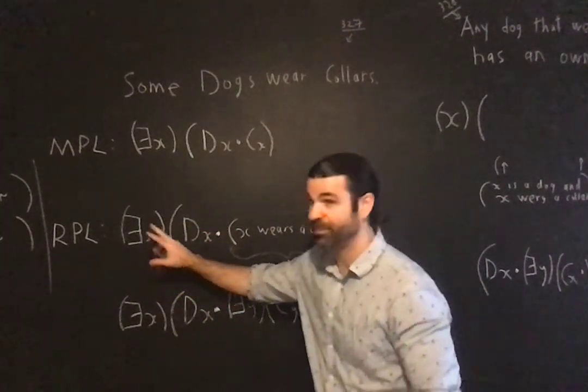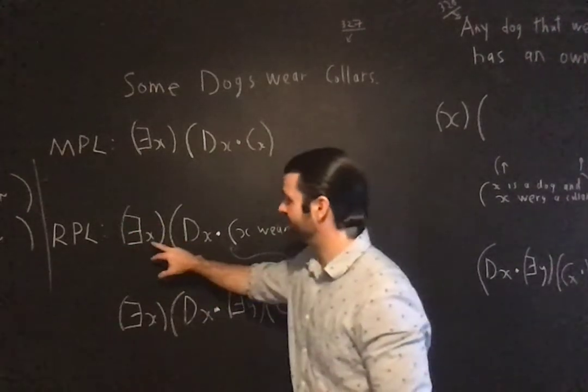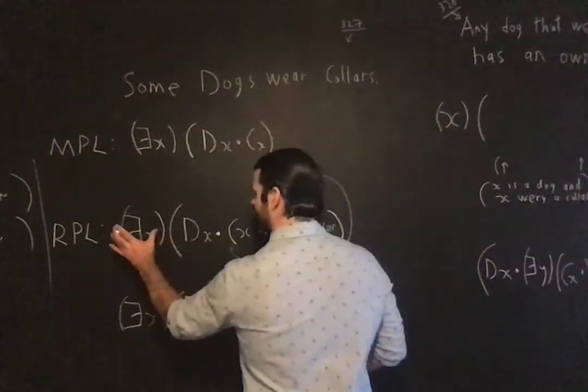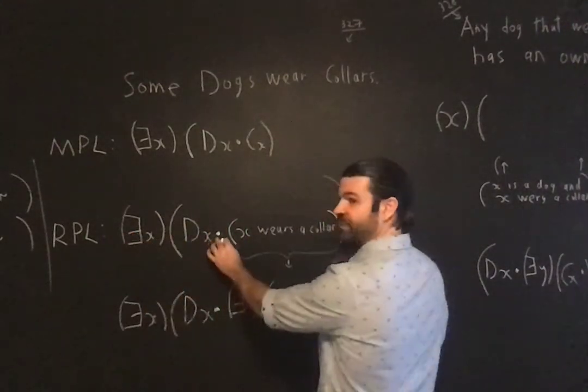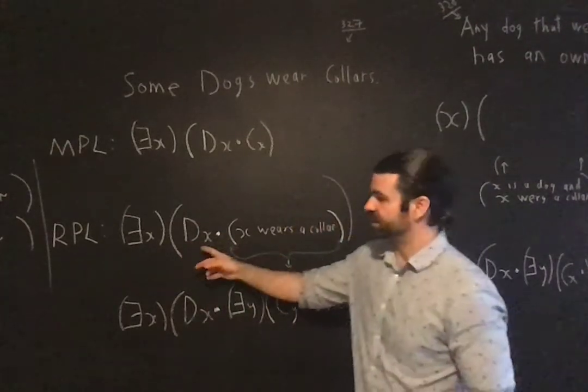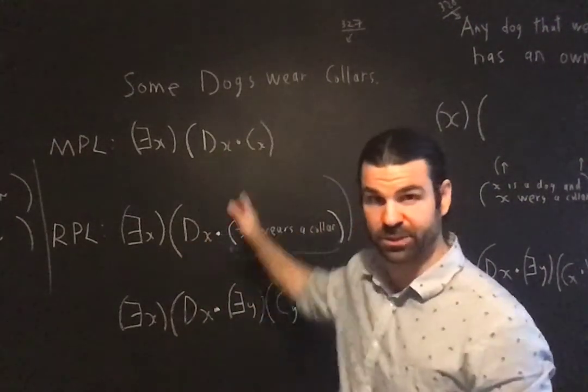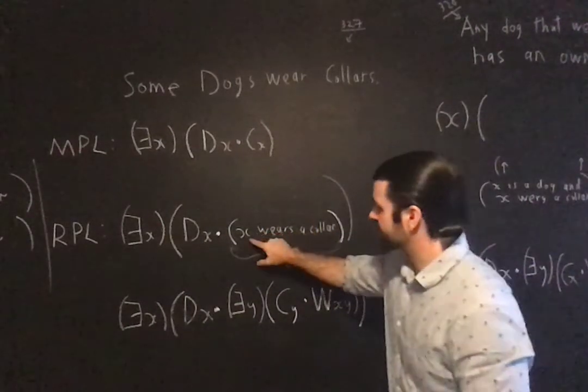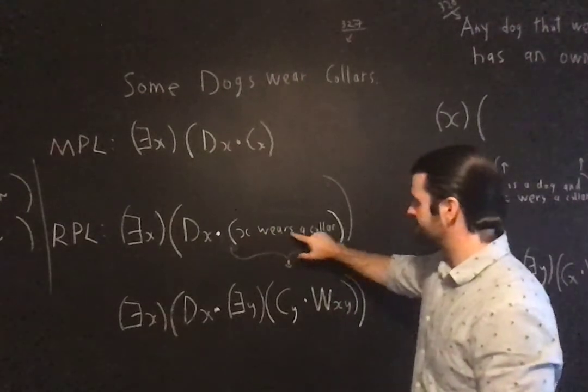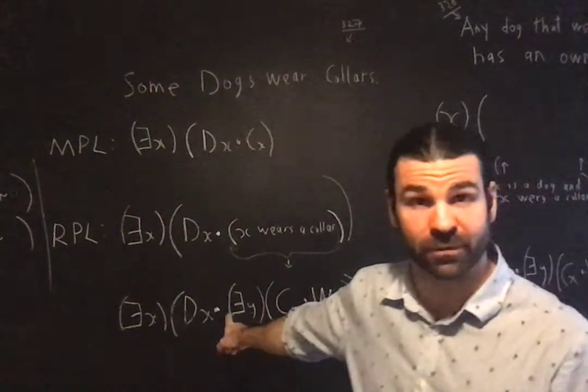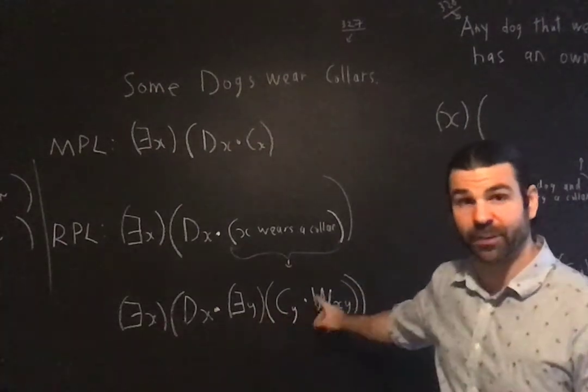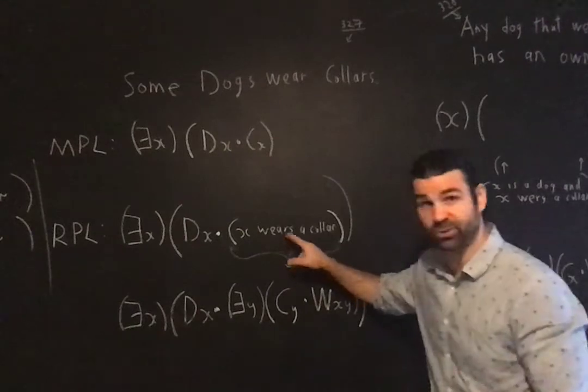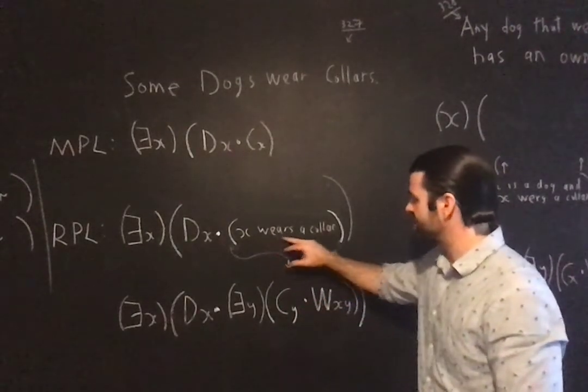Here, this is relational predicate logic, RPL. I've done a partial analysis, where I've said my form I laid down first: existence, dot. Subject, predicate. Subject is easy, it's just dogs: DX, X is a dog. One place, it's a monadic predicate. Now I've rephrased my predicate: X wears a dog. Haven't translated that yet, because that's going to involve a somewhat complex analysis.